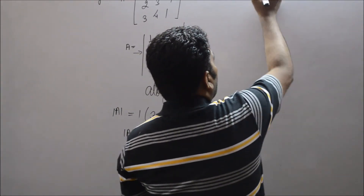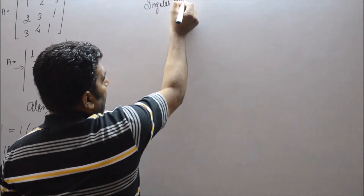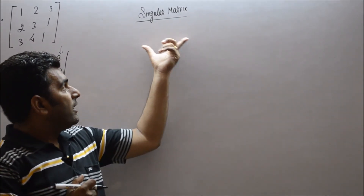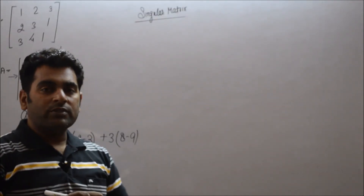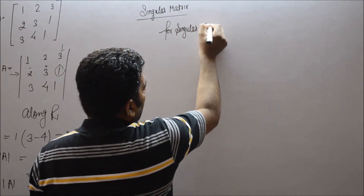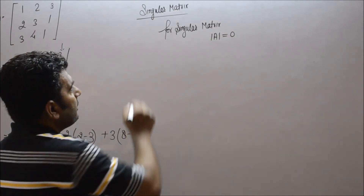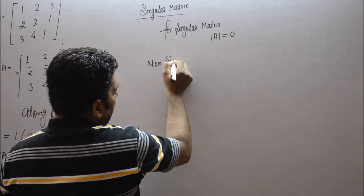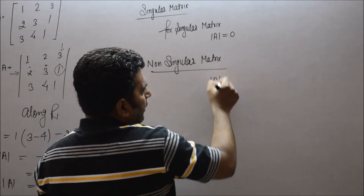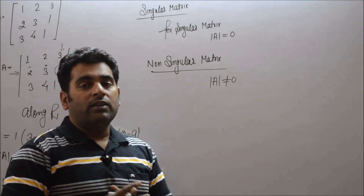Now we have an important term: singular matrix. A singular matrix is a square matrix whose determinant value is 0, so for a singular matrix det(A) = 0. Then there is a non-singular matrix, for which det(A) is not equal to 0. The concept of non-singular matrix will be important when we find the inverse of a matrix.